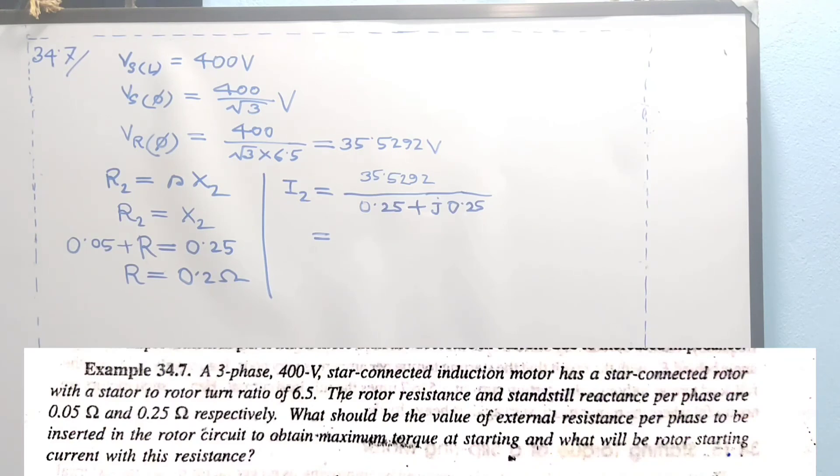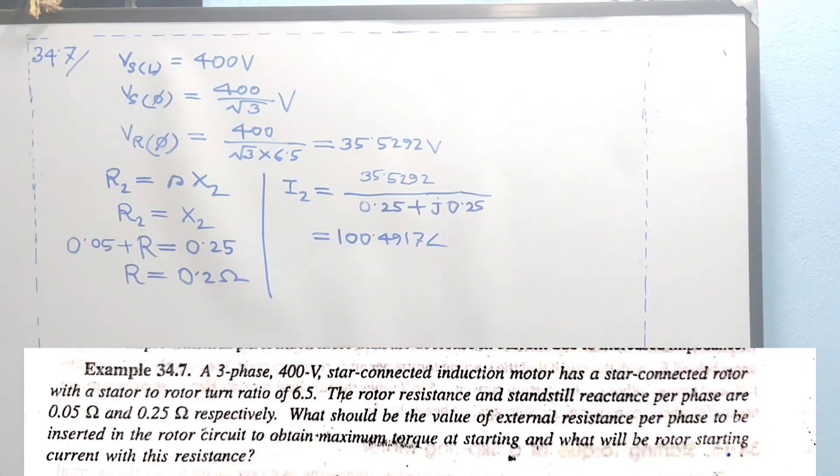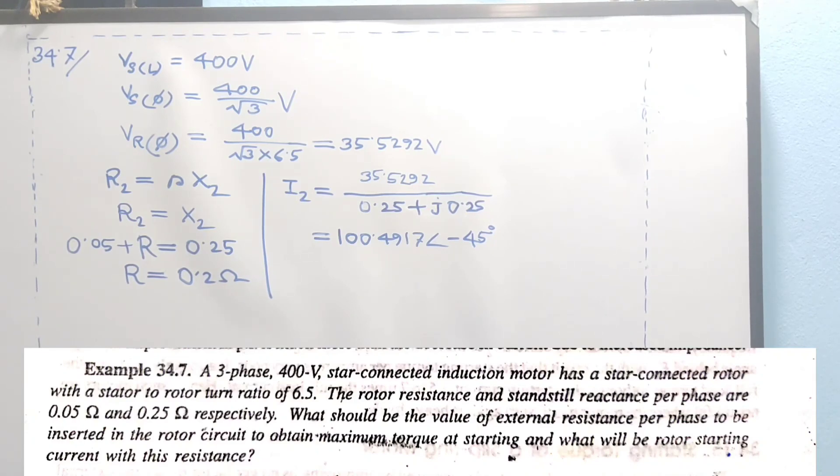I2 equals 35.57 divided by 0.25 plus j0.25. Calculating this gives I2 equals 100.49 at angle minus 45 degrees amperes. This is the rotor starting current.